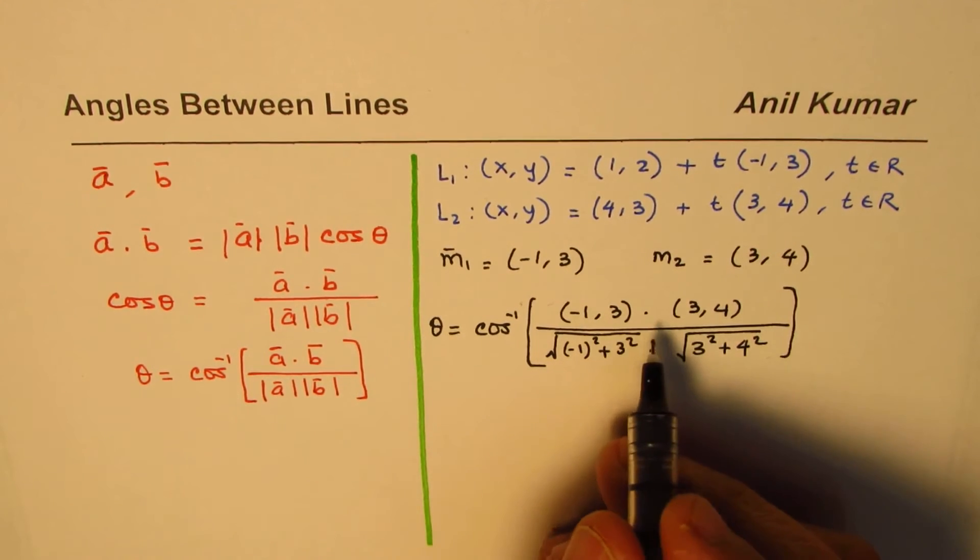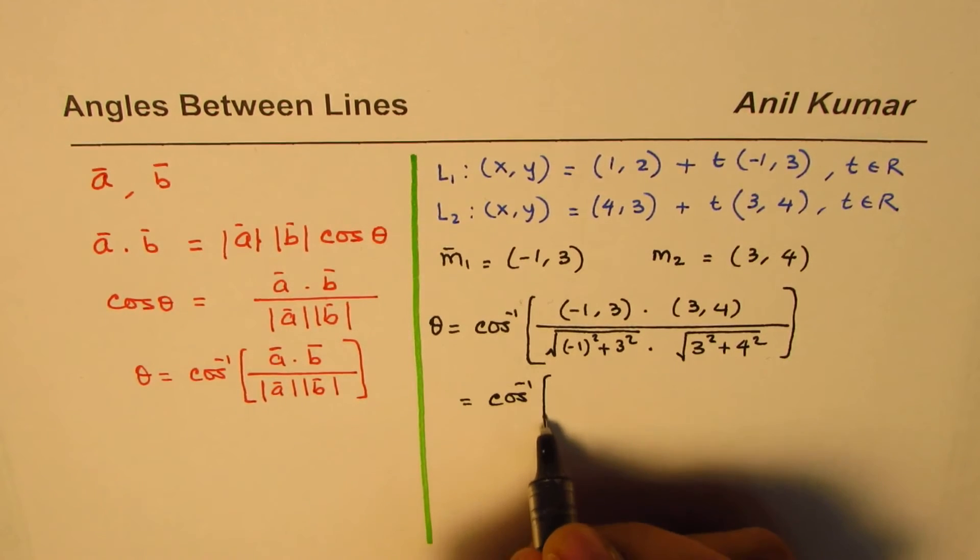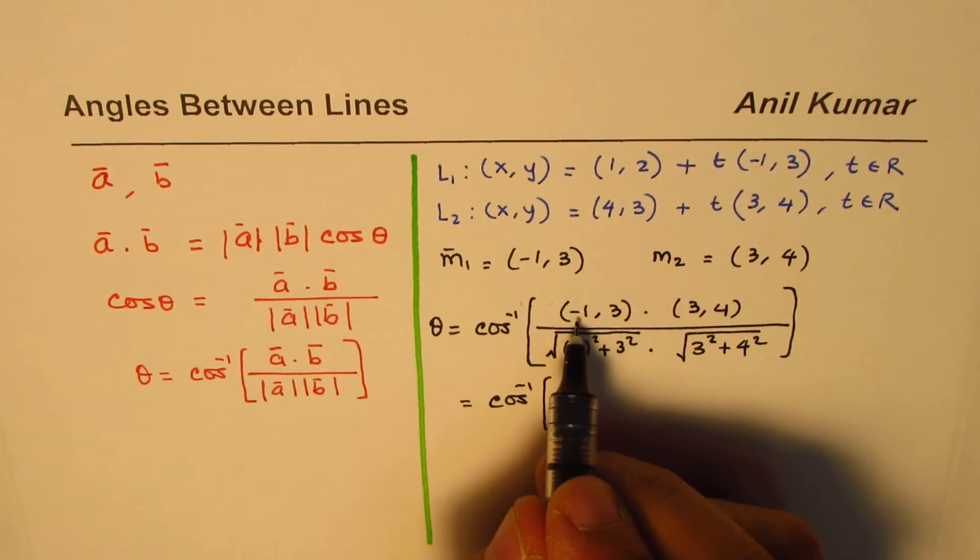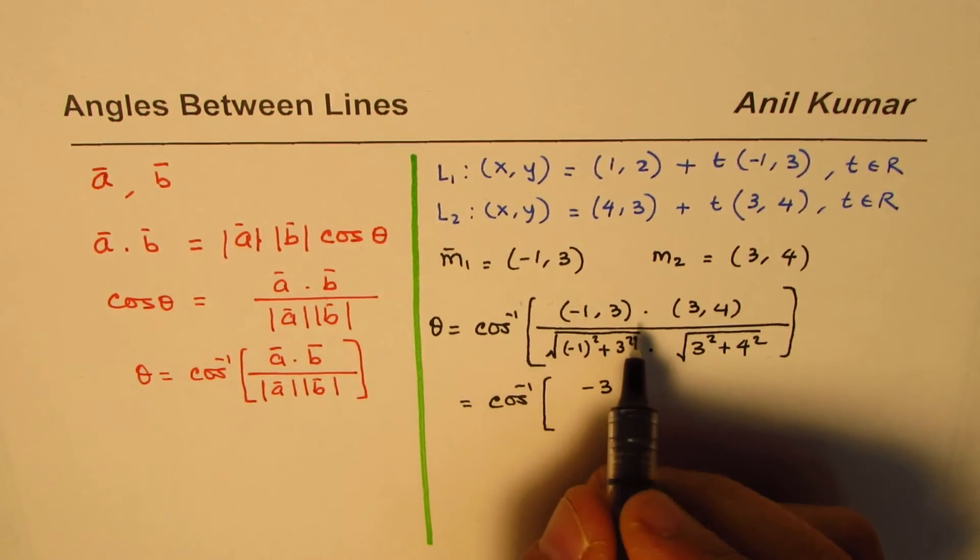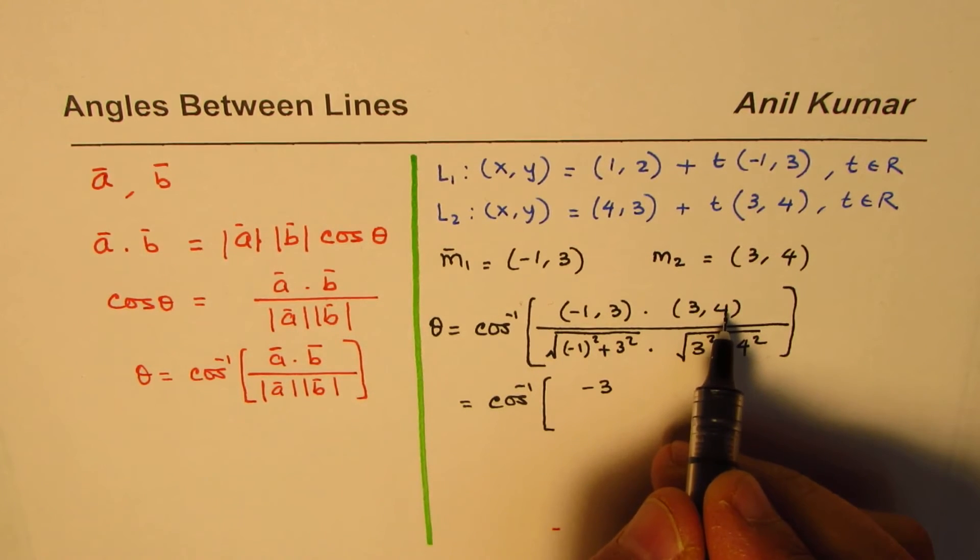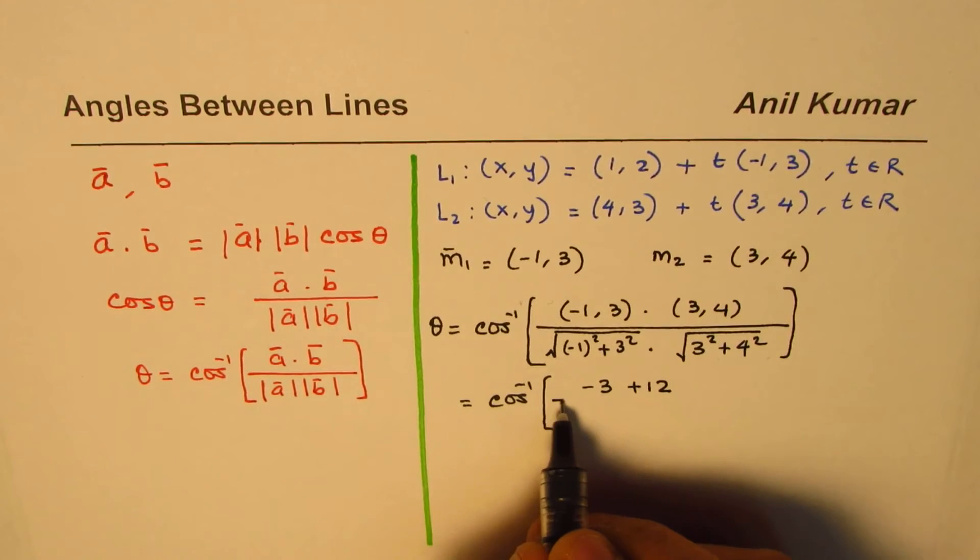Let's write down here, so we get cos inverse of the numerator which will be (-1) times 3, which is -3, plus 3 times 4, which is +12.